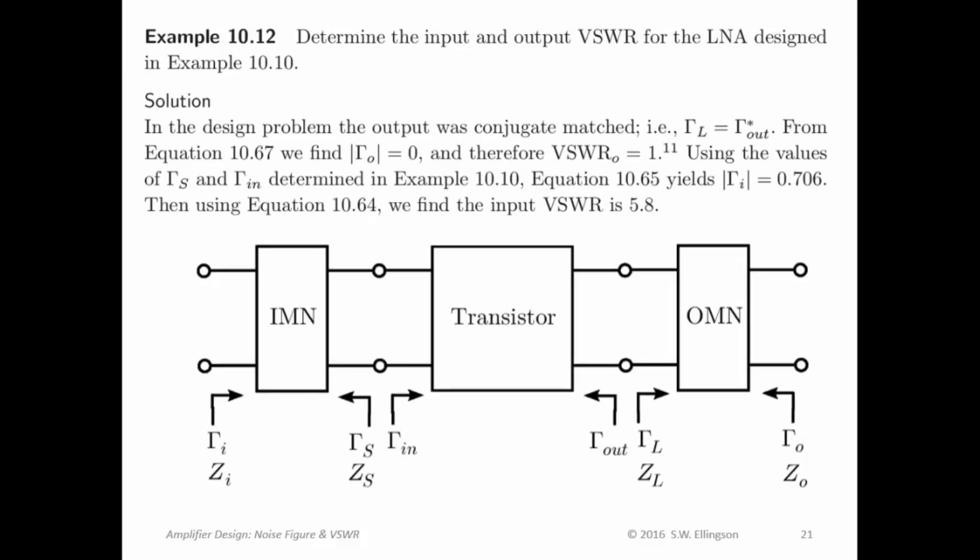Well, here's the solution. The output was conjugate matched. So, gamma sub L is gamma sub out conjugate. We find that gamma sub out is zero. That's a consequence of being conjugate matched. And therefore, the VSWR at the output is one. So, that's simple.